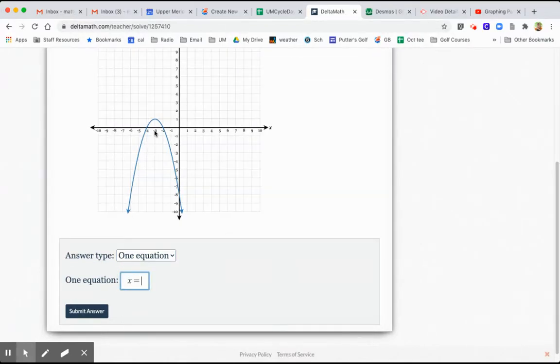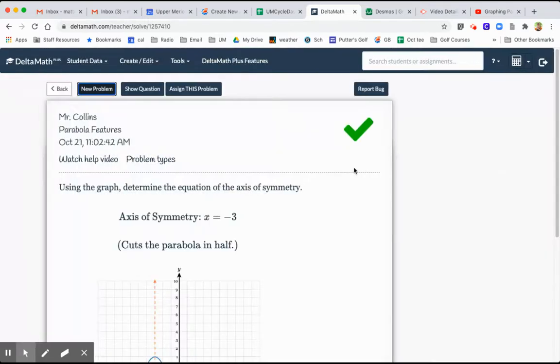And the vertex here is at negative 3. So x equals negative 3, that's a vertical line. That is what the axis of symmetry is. If I submit my answer, I get a yes.